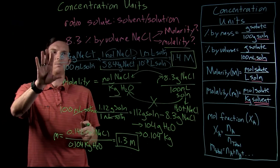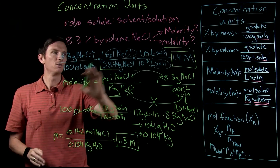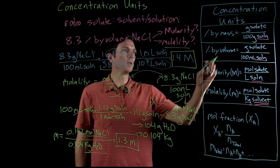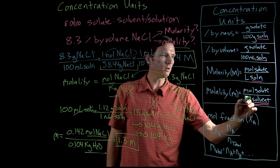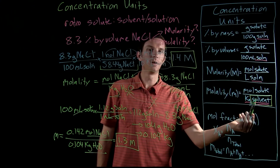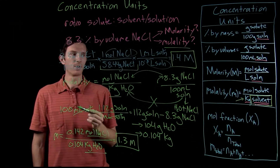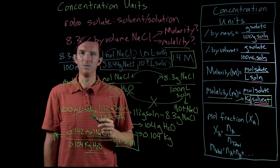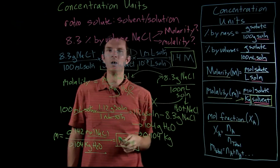We're able to convert from percent by mass, percent by volume, or any unit to molarity or molality — we just have to look at what ratio relates the two. Most units are ratios of amount of solute per amount of solution, but molality is amount of solute per kilograms of solvent, so we have to pay close attention to that. In the next video we'll discuss colligative properties and why we use molality or mole fraction instead of molarity or percent by volume.